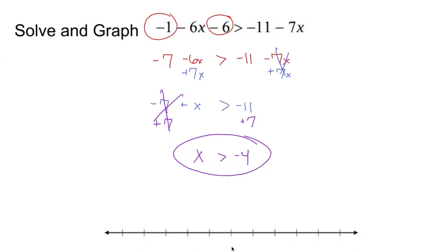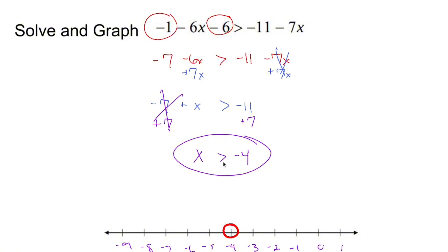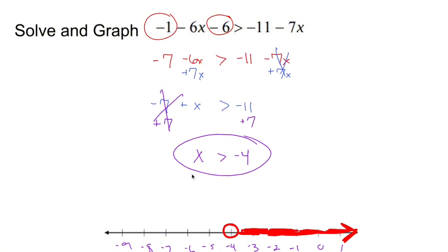Now that my x is on the left, I don't have to worry about flipping the sign. Is x alone? No — minus 7 is lingering. How do I get rid of a negative 7? Do its inverse: add 7 to both sides. So x is now greater than negative 4. Put negative 4 on the number line. Since x is greater than — not greater than or equal to — put a circle at negative 4 and don't fill it in. X is everything bigger than that, so shade to the right of negative 4. All those numbers — 0, negative 2, 1000 — are solutions to that inequality.